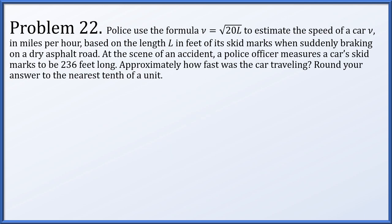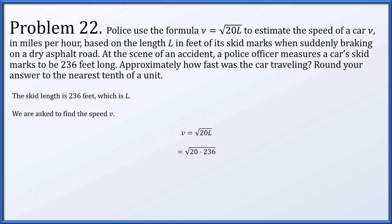Problem 21: find the inverse of f of x equals 6x to the 7th plus 7. Set y equals 6x to the 7th plus 7, swap x and y, then solve for y: subtract 7, divide by 6, take the 7th root. The inverse is y equals x minus 7 over 6 to the 1/7 power.